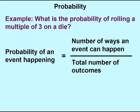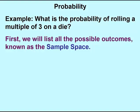We'll give you a simpler example to demonstrate how to calculate probability. What is the probability of rolling a multiple of three on a die? The first thing we need to do is determine all the possible outcomes. A list of all the outcomes is known as the sample space. So for rolling a die, we know we could have one, two, three, four, five, or six — we have six possible outcomes.